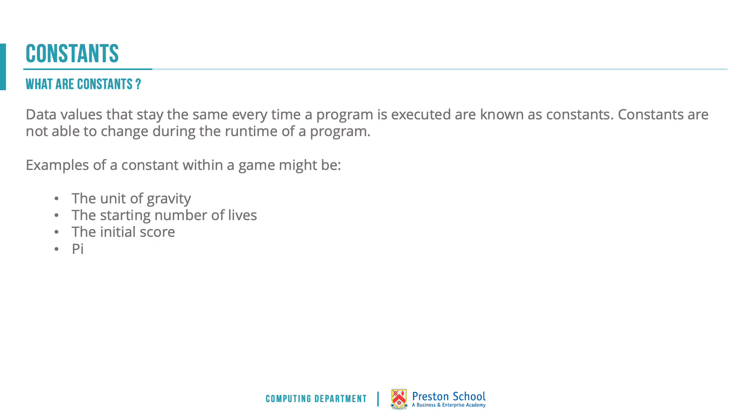So constants are those data values that stay the same every time the computer program is run. We know that they will never change. Some examples might be the unit of gravity. So gravity makes you accelerate at 9.81 meters per second squared, if I can remember my physics A level.